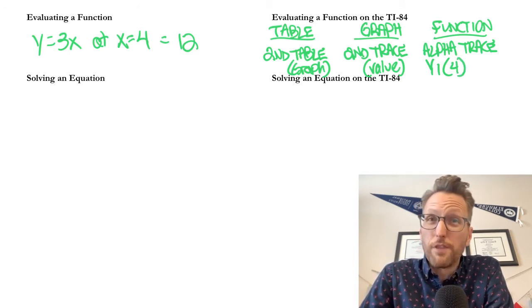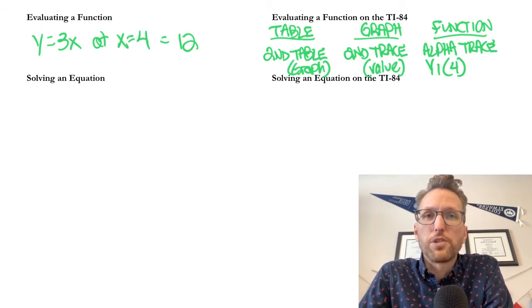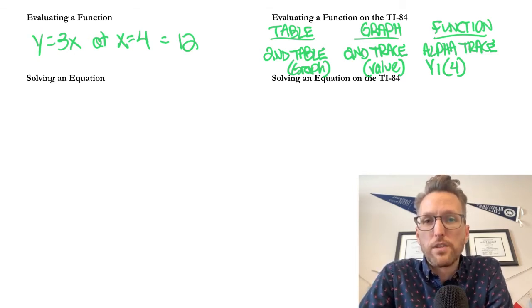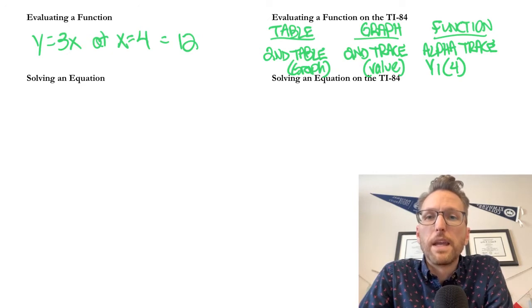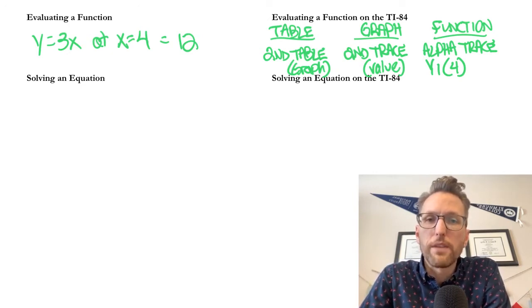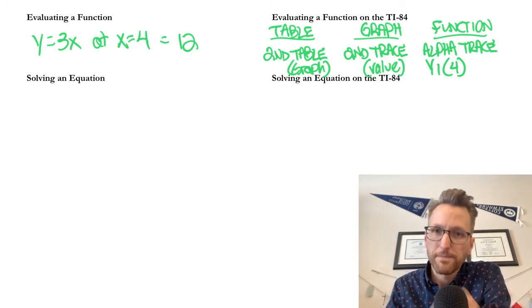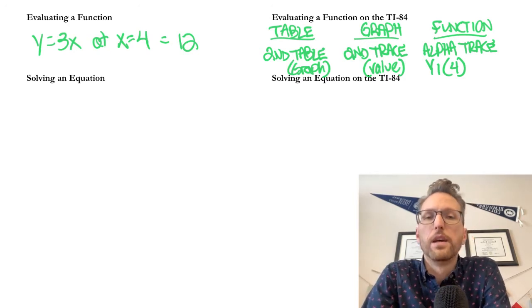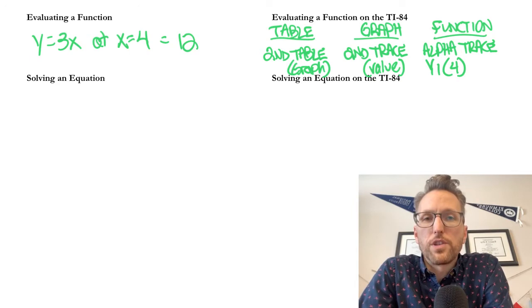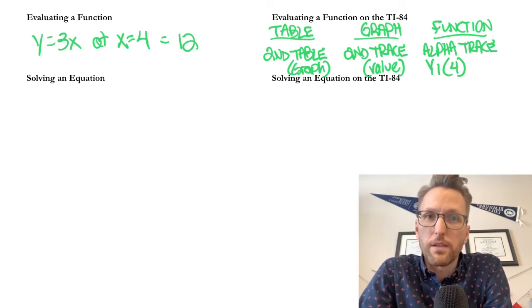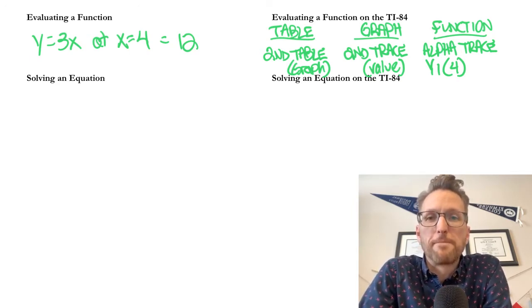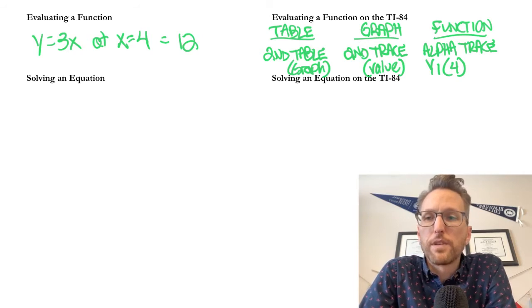Otherwise, you press the vars button for the variables. Alpha trace allows you to pull that function. So y1 or y2, whatever. And then enter the number that you're evaluating in parentheses. So kind of like saying what's 5 squared. You just do 5 squared. If your function is x squared, then you're just plugging in 5 into that. And I'll show you some of these as well.